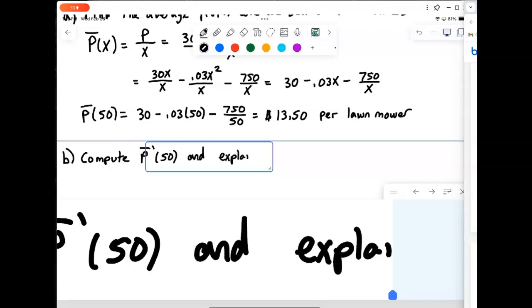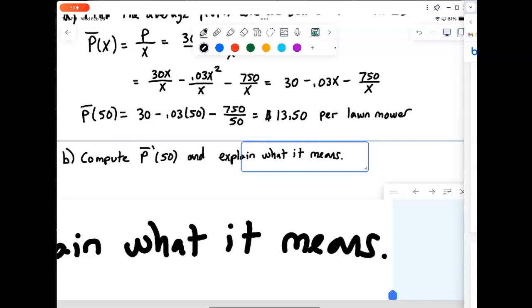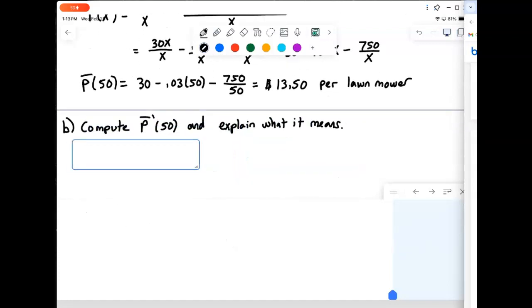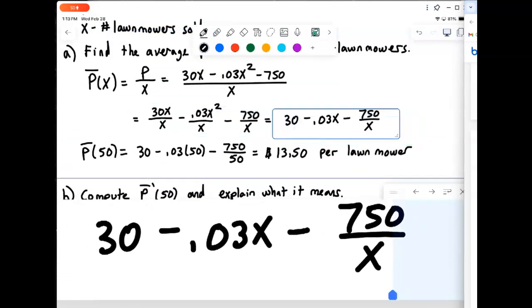And explain what it is telling us. So we need to compute P bar prime first, and then we're going to evaluate it at 50.